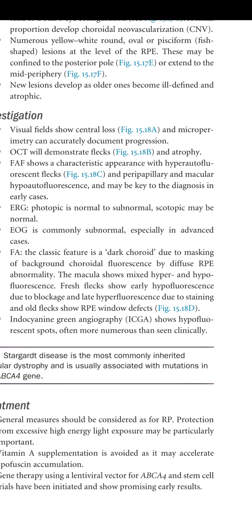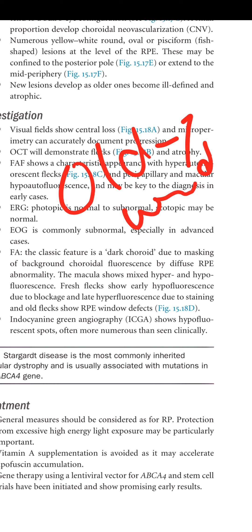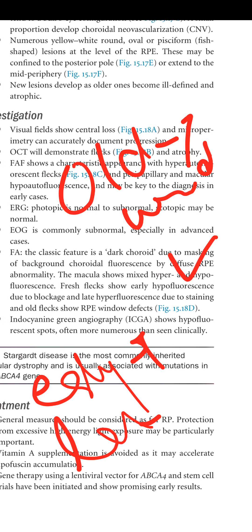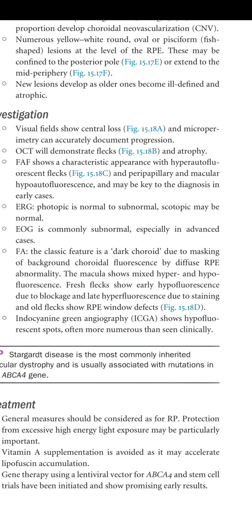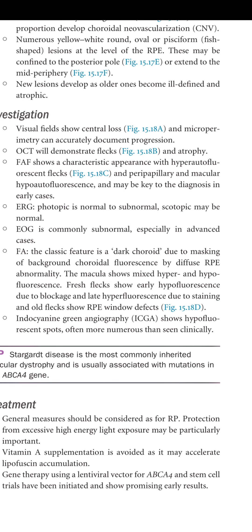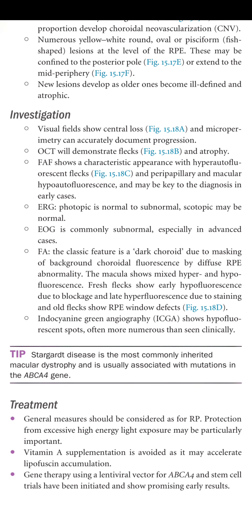The macula shows mixed hyper- and hypo-fluorescence. Fresh flecks show early hypo-fluorescence due to blockage and late hyper-fluorescence due to staining; old flecks show an RPE window defect. Indocyanine green angiography shows hypo-fluorescent spots, often more numerous than seen clinically. Stargardt disease is most commonly caused by mutation in the ABCA4 gene.